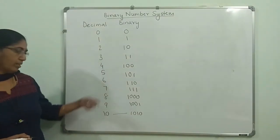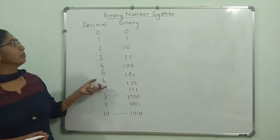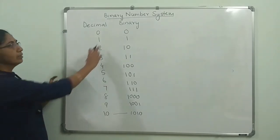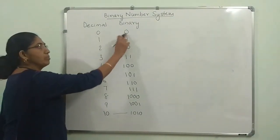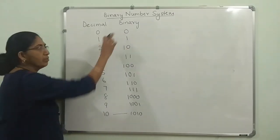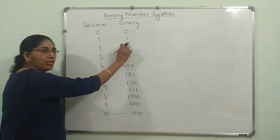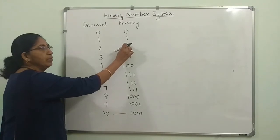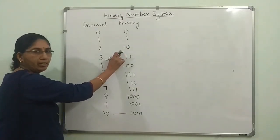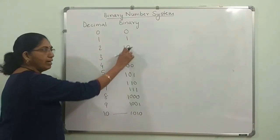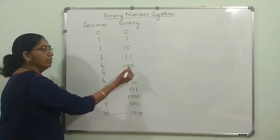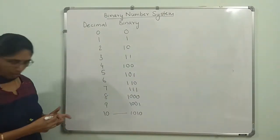Like this you can keep on writing the binary numbers. Corresponding to zero it is zero, one is one, for two you add one — you only have zero and one — when you add one more, one plus one: in that position zero comes and one shifts to the next position. Then keep adding one more: zero plus one is one, one plus zero is one, and so on.